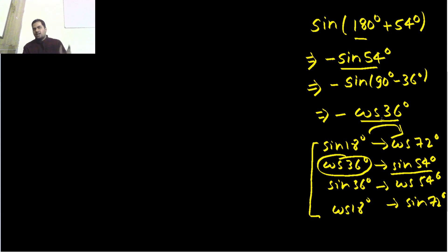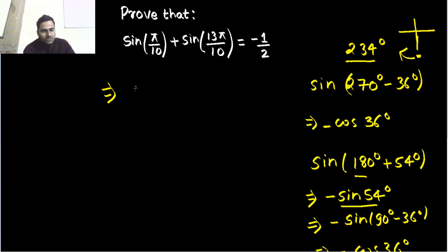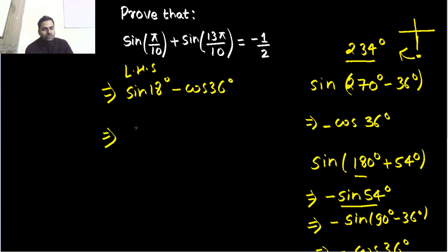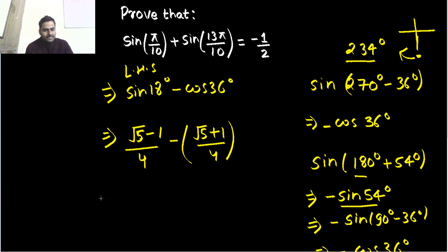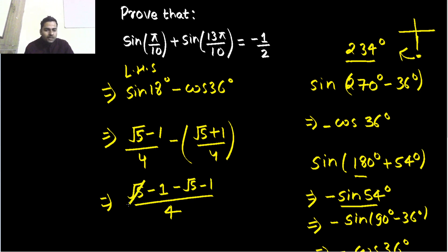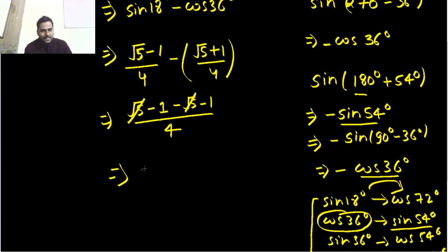So cos(36°) value: sin(18°) is (√5 − 1)/4, and cos(36°) is (√5 + 1)/4. Working with the LHS — sin(π/10) plus the reduced sin(13π/10) — we have sin(18°) minus cos(36°), which is (√5 − 1)/4 minus (√5 + 1)/4. Taking 4 as LCM: √5 − 1 − √5 − 1 = −2, giving −2/4 = −1/2. So this gives you minus half, which is your RHS answer.